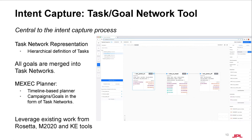Our second tool, called the Test Network Tool, is a central piece in our intent capture process. Here, campaigns and goals are represented in the form of a hierarchical test network based on the MEXEC planner's input, which includes task definition, task instances, and their corresponding temporal, resource, and execution constraints. This tool is designed for mission planners, autonomy engineers, and spacecraft engineers to add their goals. It is also designed to merge the goals from the science planning tool into the central test network representation of the mission. This particular tool leverages several existing works, including Rosetta, Mars 2020, GPO, and ItsSimple.